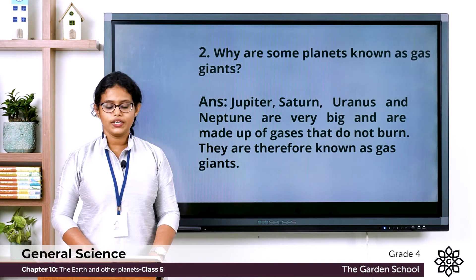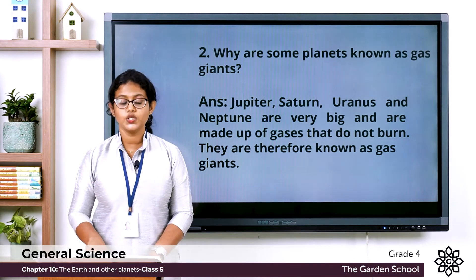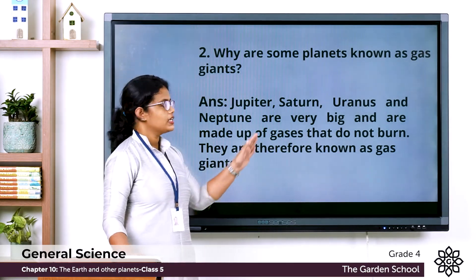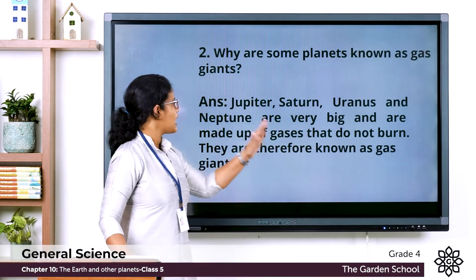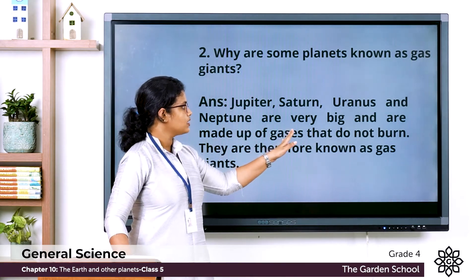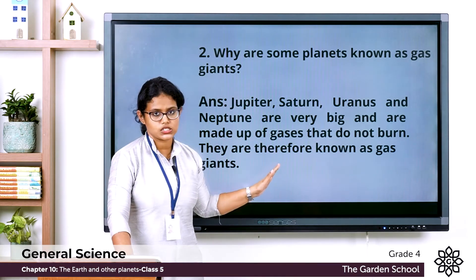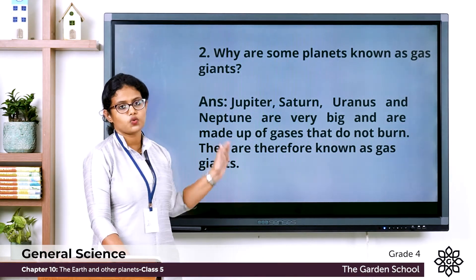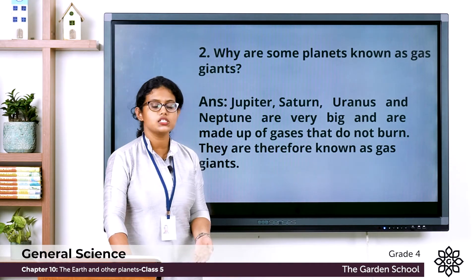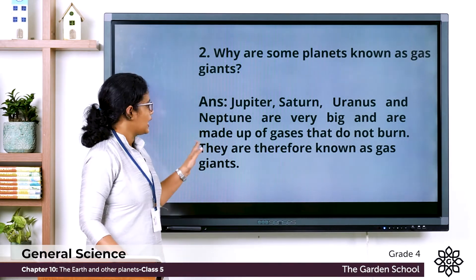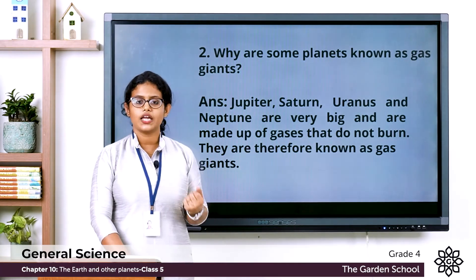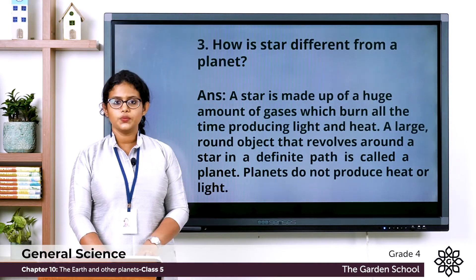The second one: Why are some planets known as gas giants — Jupiter, Saturn, Uranus, and Neptune? These are outer planets. They are very big and are made up of gases that do not burn. They are therefore known as gas giants.